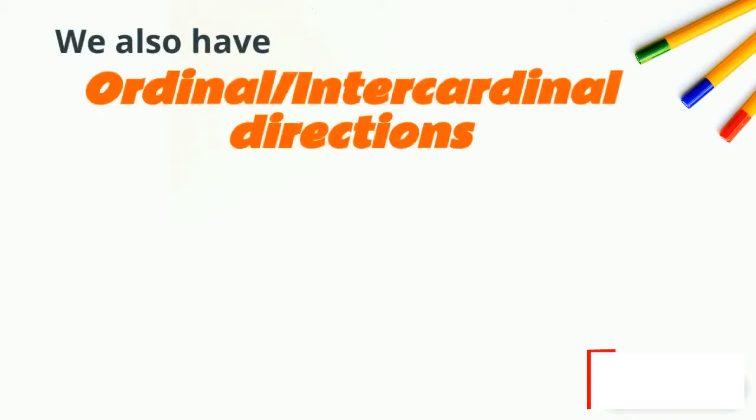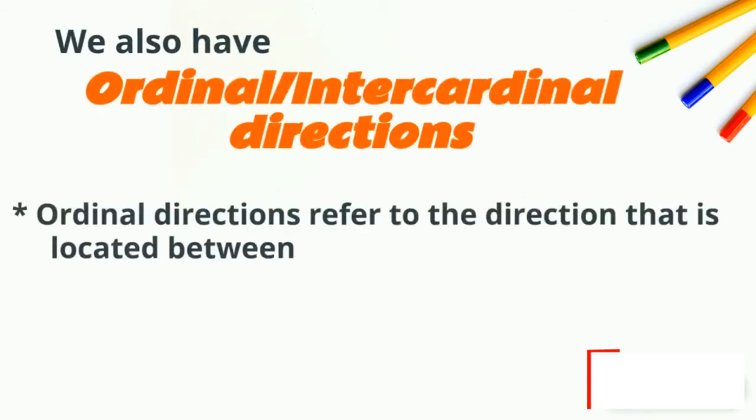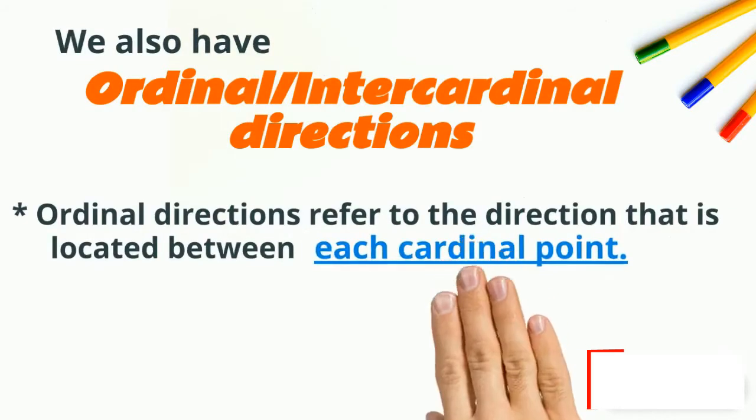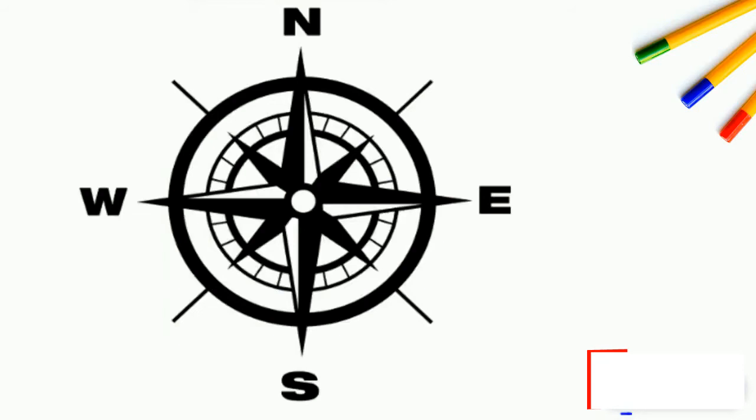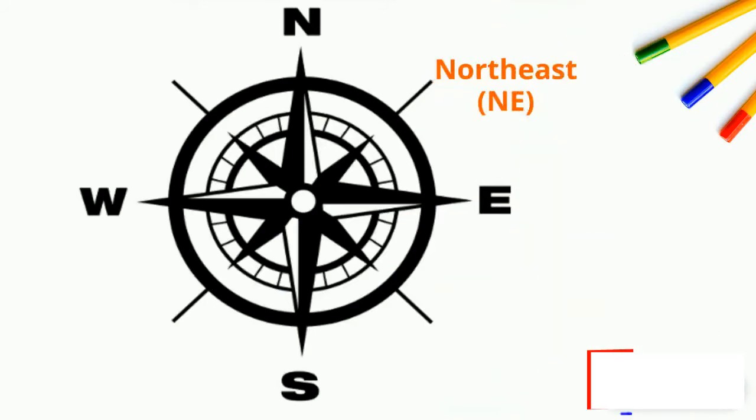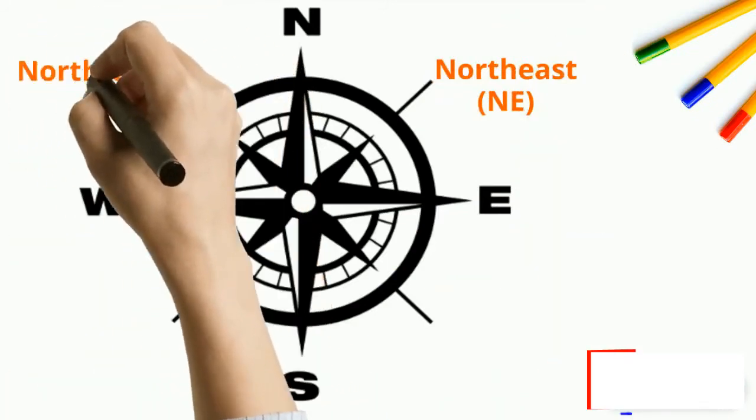Ordinal directions refer to the direction that is located between each cardinal point. The direction that is located between north and east is called northeast. The one between north and west is called northwest.